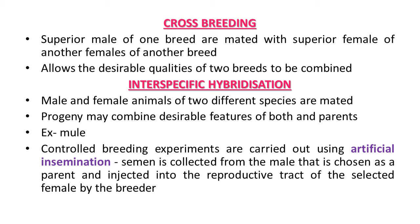In cross-breeding, superior males of one breed are mated with superior females of another breed. Cross-breeding allows the desirable qualities of two different breeds to be combined. The progeny hybrid animals may themselves be used for commercial production, or alternatively subjected to some form of inbreeding and selection to develop new stable breeds superior to existing breeds. Many new animal breeds have been developed by this approach.